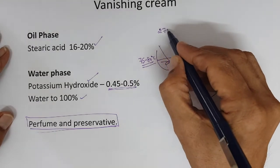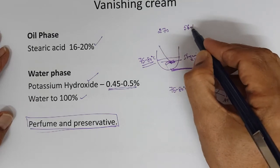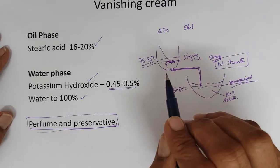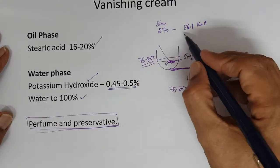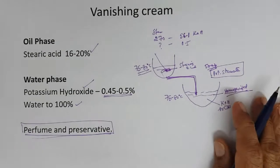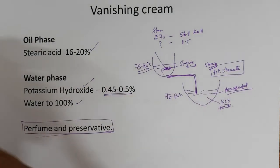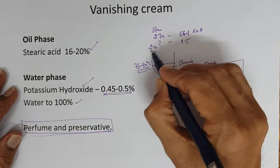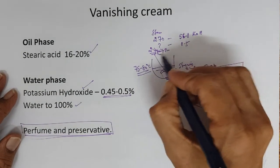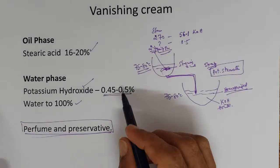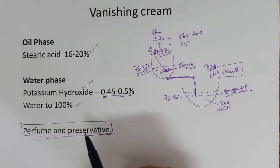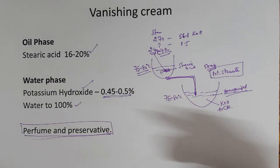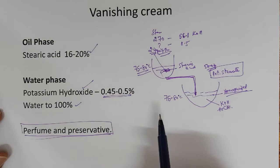If you take the molecular weight of stearic acid used - it's not pure stearic acid, it's a combination of stearic and palmitic which we will discuss subsequently - we will take the molecular weight of stearic acid 270. 56.1 is the molecular weight of potassium hydroxide KOH. Now we are adding 0.5% KOH, how much stearic acid it will react? Around 2.4 grams of stearic acid.